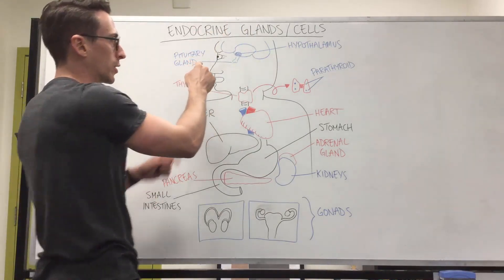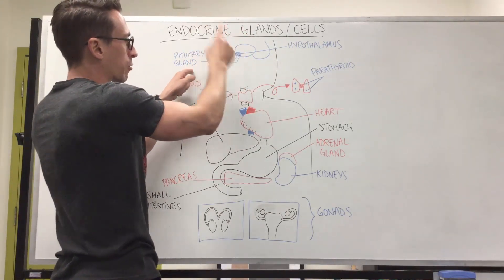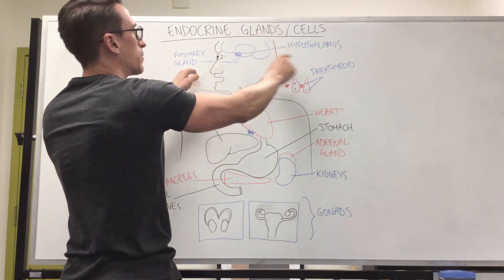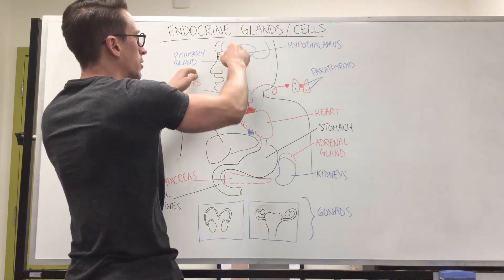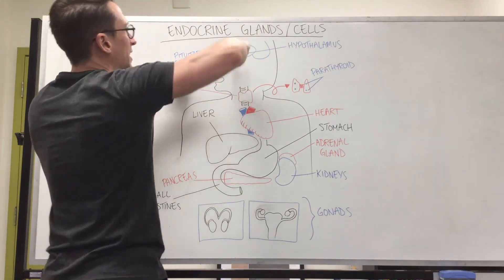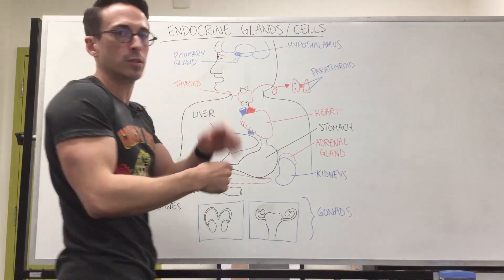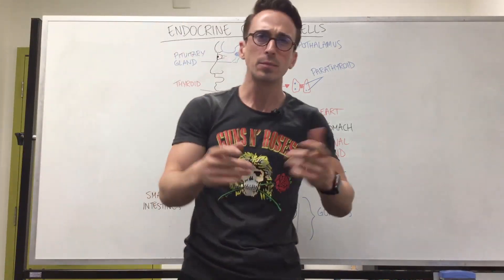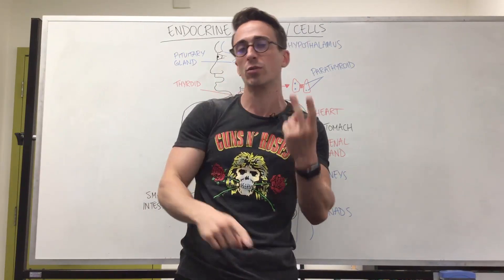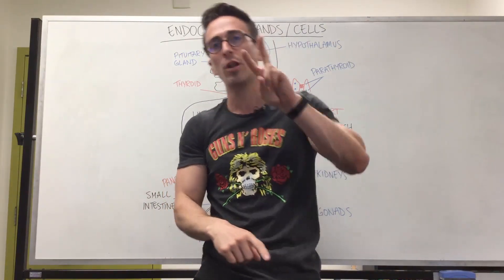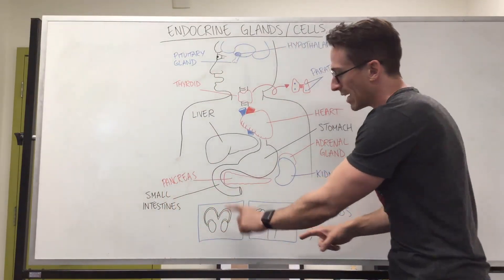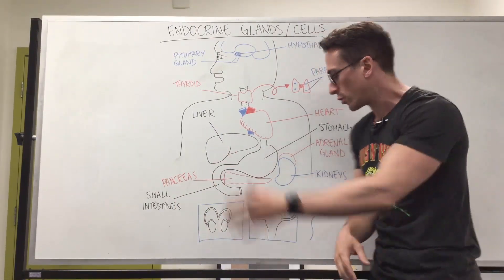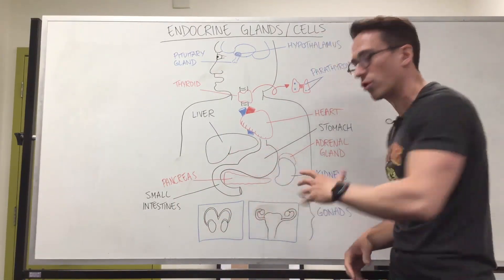The anterior pituitary gland is controlled by the hypothalamus through a blood supply, which means the hypothalamus must release its own hormones through this blood supply to tell the pituitary gland to release its hormones. The types of hormones the anterior pituitary releases include luteinizing hormone and follicle stimulating hormone. These two hormones play an important role in the male and female reproductive system, helping produce testosterone in males and estrogen and progesterone in females.